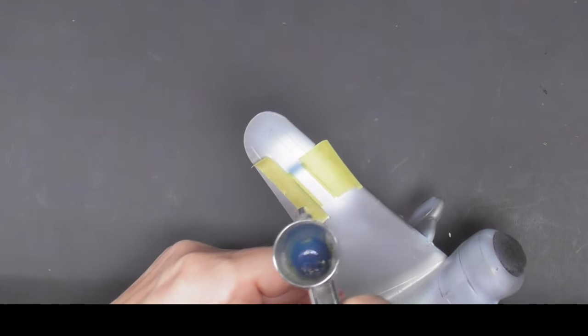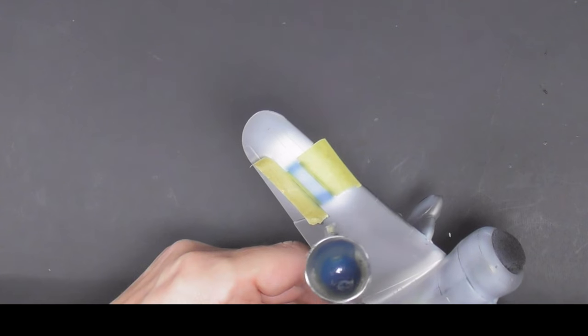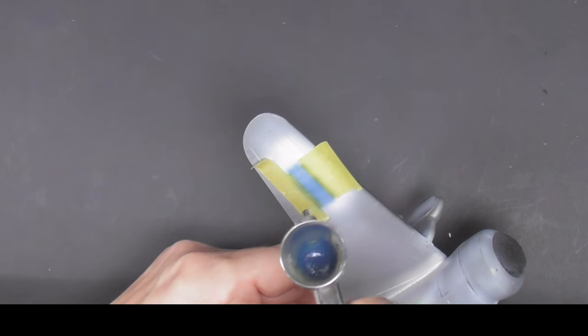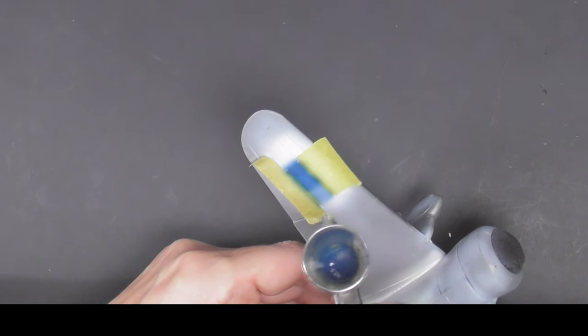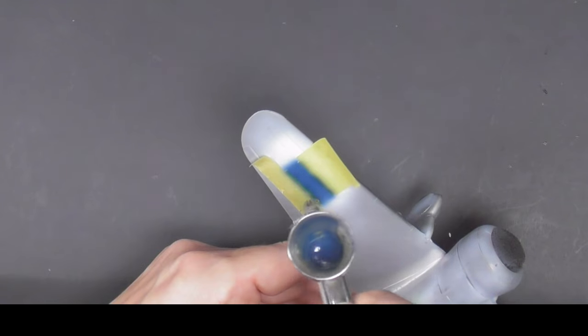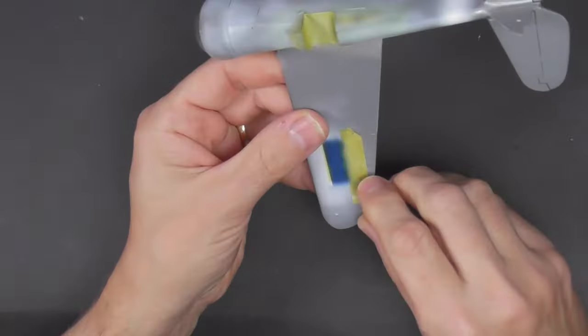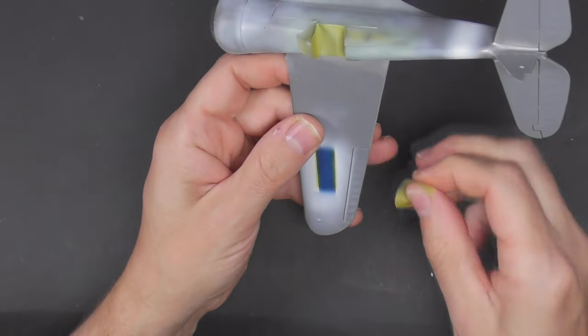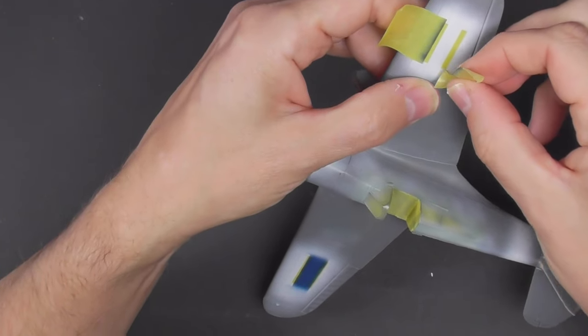So with the white masked off, we can go in with the blue on the wings. Relatively easy to make your own masks for this—it's literally just rectangles of tape. But it's important to get your measuring right and make sure everything's nice and even.